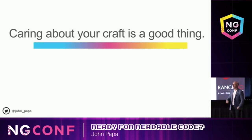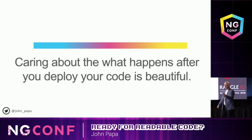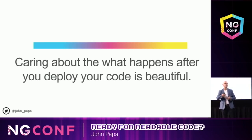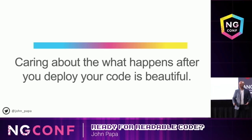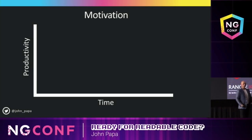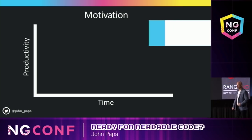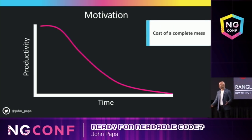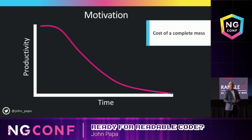Caring about your craft is a good thing, but caring about what happens after we deploy is really important. After we deploy, who is going to maintain that? Sometimes it's you, sometimes it's the person next to you. Productivity over time for a complete mess — this is what we get in a lot of our applications. Why do a lot of applications get rewritten? Because people come into projects and can't figure out what's happening in the codebase right now.